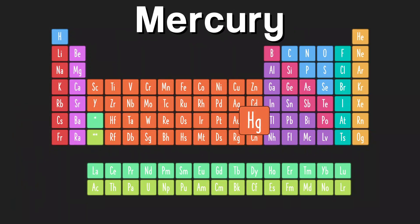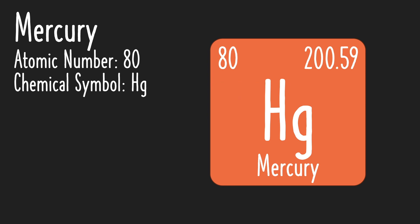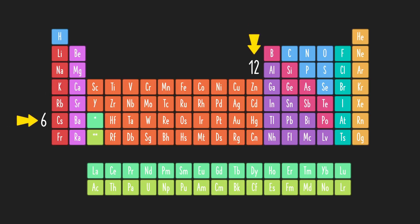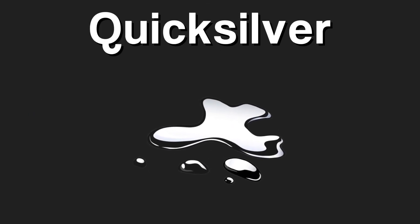On the periodic table there's an element called Mercury, also known as Quicksilver. It's a liquid metal. Mercury has atomic number 80 and chemical symbol HG. You can find it in group 12 and period 6 in the transition metals group. It is the only liquid metal at room temperature.